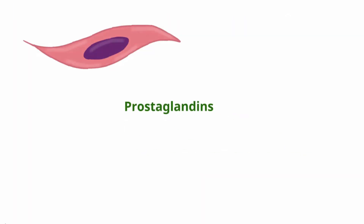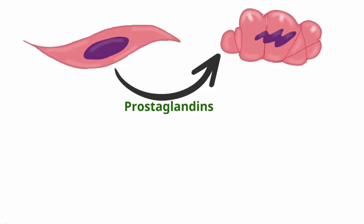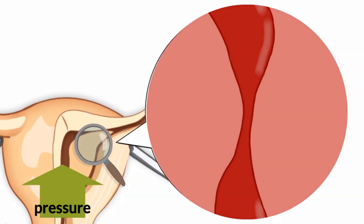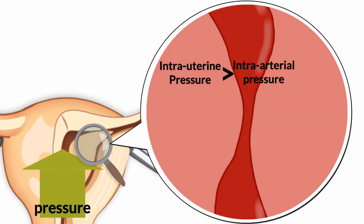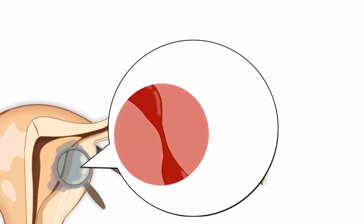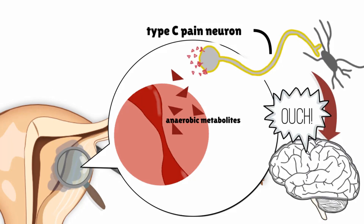Prostaglandins mediate smooth muscle contraction and act on the myometrium to cause contractions which lead to high intrauterine pressures. The increased intrauterine pressure exceeds arterial pressure. The arteries serving the uterine tissues are compressed and cause uterine ischemia. In ischemia, anaerobic metabolites accumulate and stimulate type C pain neurons. Other causes of dysmenorrhea are mediated by stretch receptors and other mechanisms.